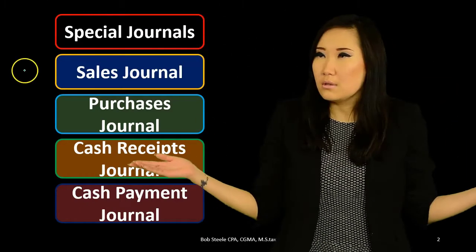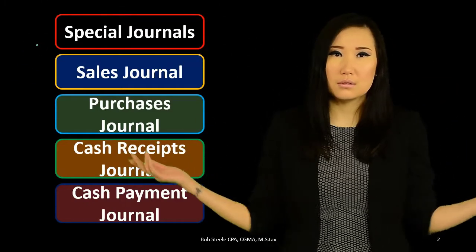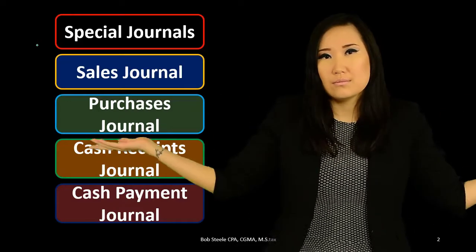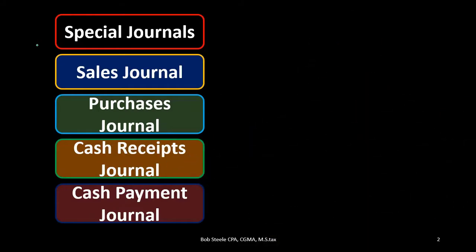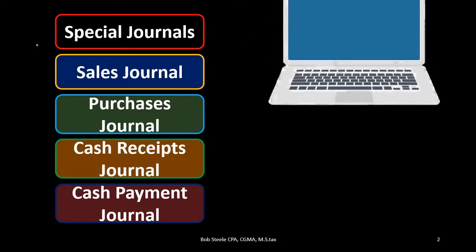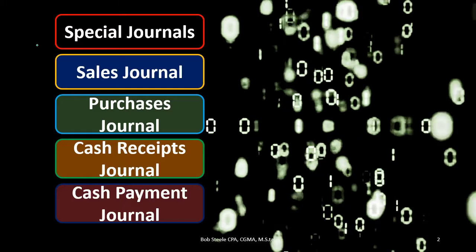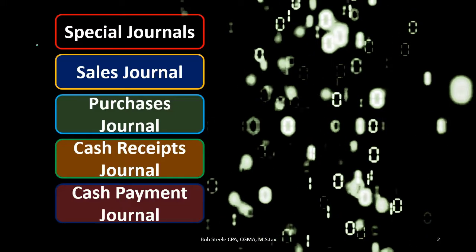Why would we do this? We've seen accounting systems in the past, either a manual system or an automated system, where we haven't seen so much of the special journals. The special journals are usually going to be used when we're using more of a manual system, because it's going to be designed to limit the type of data input that we have to put in place.